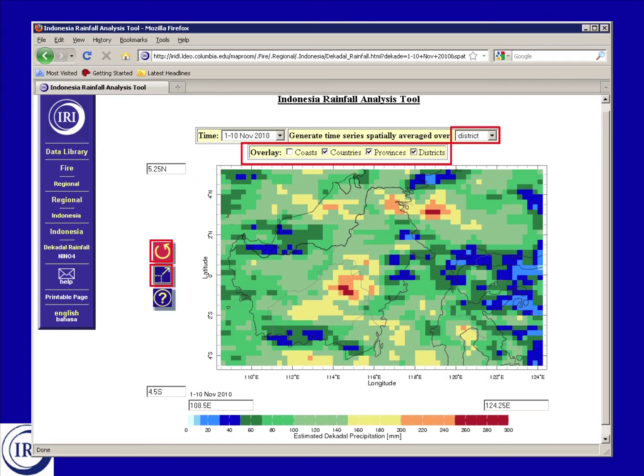Above the map, you'll see some options for overlaying different types of boundaries on the map, including coasts, countries, provinces, and districts.